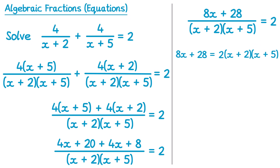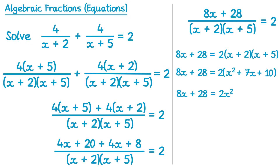Next we'll leave the left hand side alone, and expand those brackets. If we expanded that double bracket we'd have x times x — that's x squared. Then x times 5 which is 5x, and 2 times x which is 2x — and 5x and 2x adds to make 7x. And then finally 2 times 5, which is 10. On the right hand side we then expand this bracket: 2 lots of x squared, 2 lots of 7x that's 14x, 2 lots of 10 that's 20.